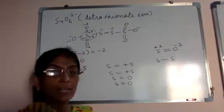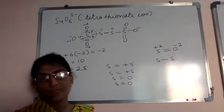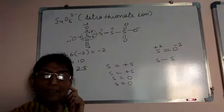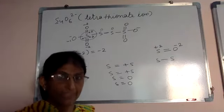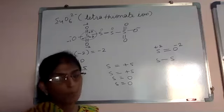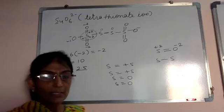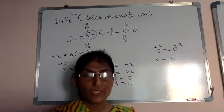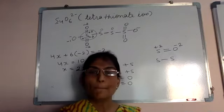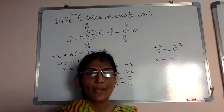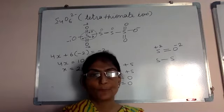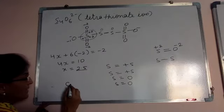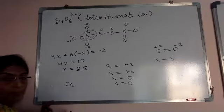These are some exceptions to keep in mind when calculating oxidation states. Now as an example to try: CrO5 — find chromium's oxidation state in this compound, which contains peroxide bonds.